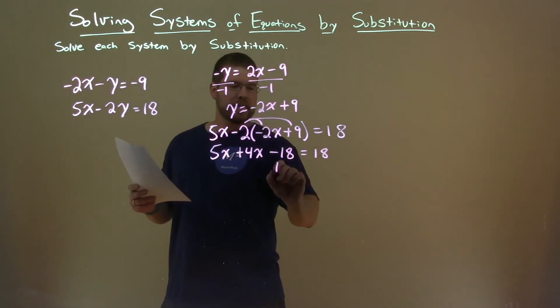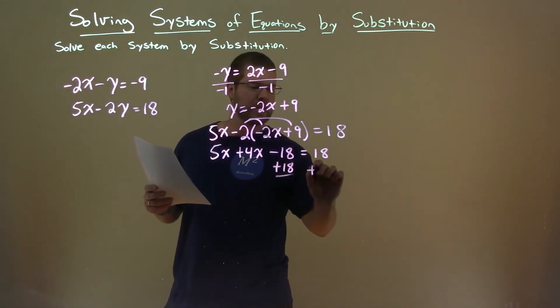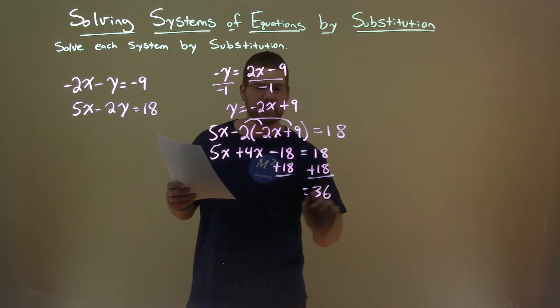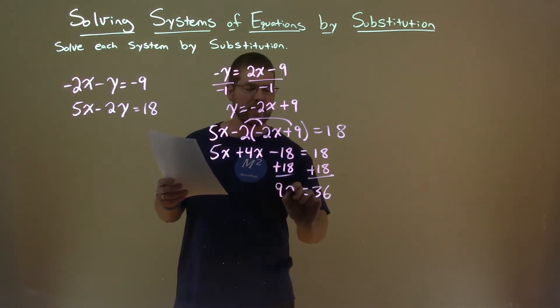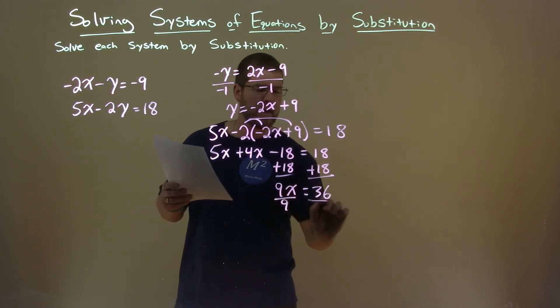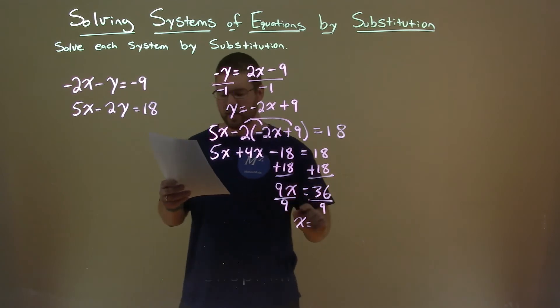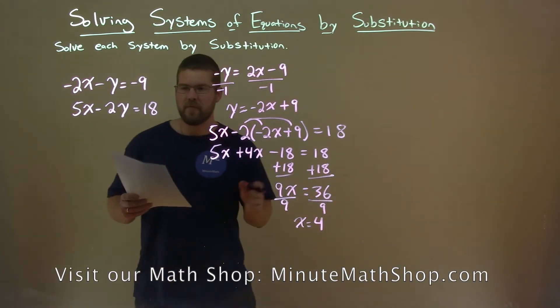Let's add 18 to both sides. Let's get our like terms together. 18 plus 18 is 36. 5x plus 4x is 9x. Divide both sides by 9, and x is equal to 36 divided by 9, which is 4. Halfway there.